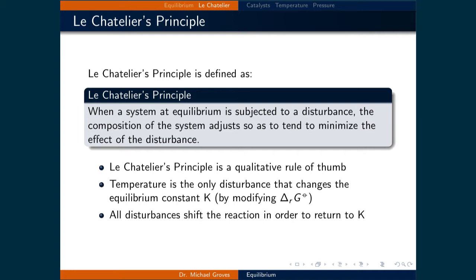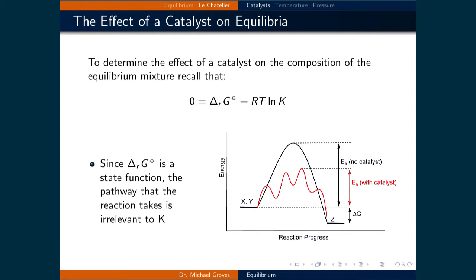Now let's apply Le Chatelier's principle to various conditions. First, the effect of a catalyst. Recall that equilibrium occurs when the forward and reverse reaction rates are equal. A catalyst increases both reaction rates by changing the pathway the reaction follows, as illustrated in the figure on the bottom right. This figure shows two reaction pathways, where the parabolic pathway is uncatalyzed and the multi-step pathway is catalyzed. However, this does not affect the equilibrium concentrations of the reaction, since the change in reaction rate is equivalent in both directions.